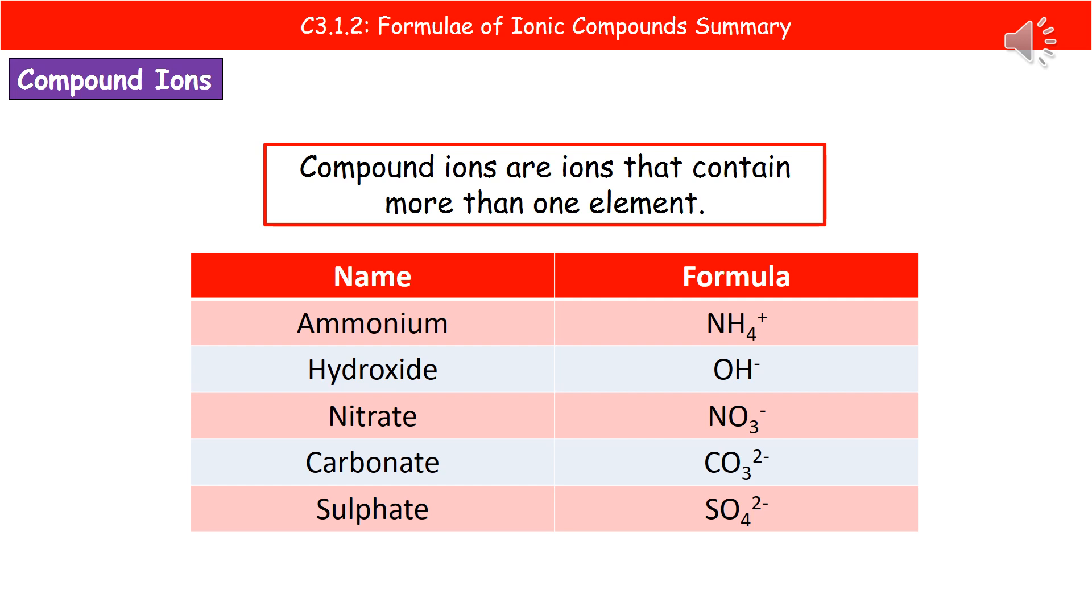The ammonium ion, for example, has nitrogen and hydrogens. It has the formula NH with a subscript four because there are four hydrogens, and it has a positive charge overall. That charge applies to the whole of that compound ion.